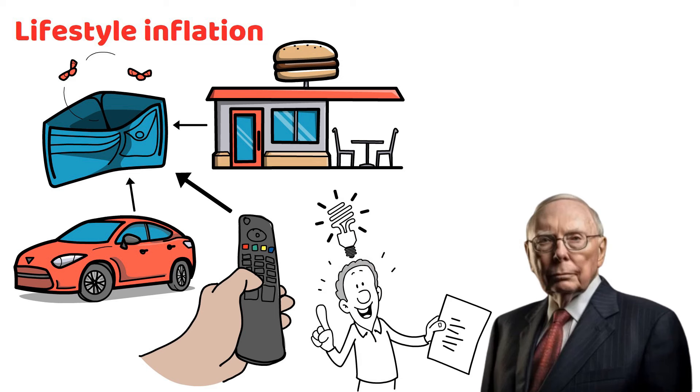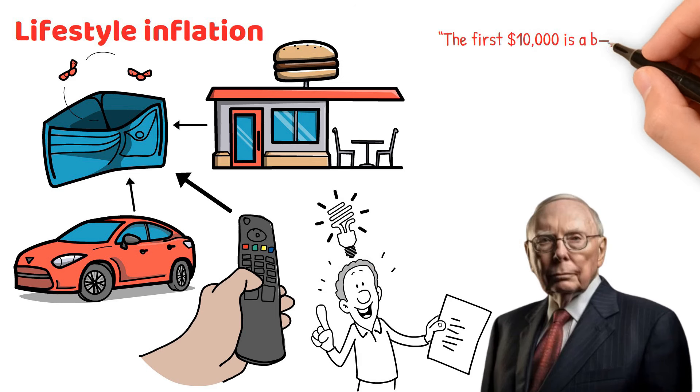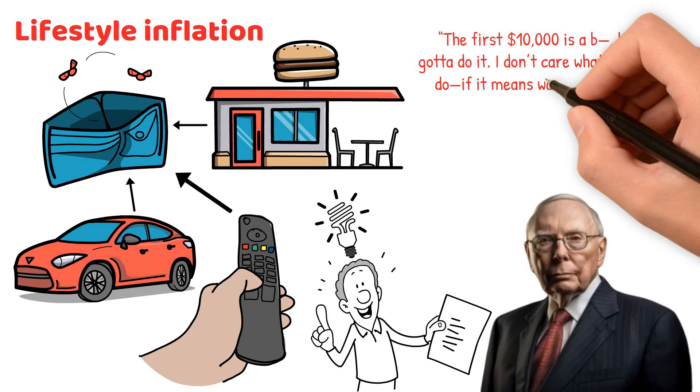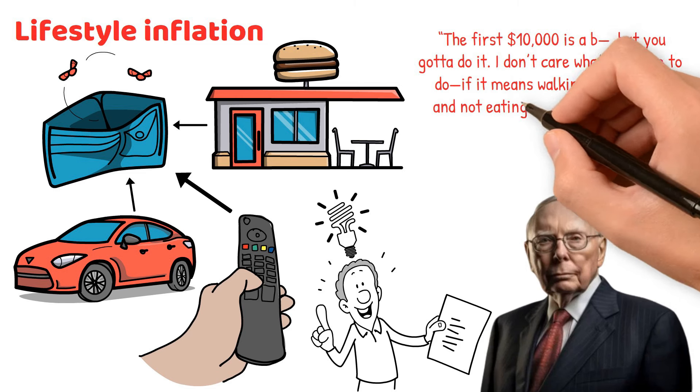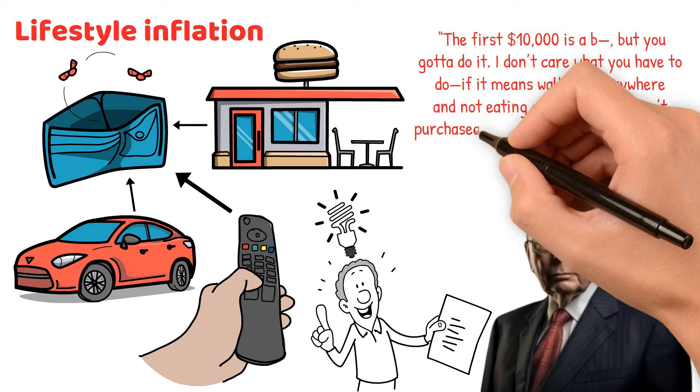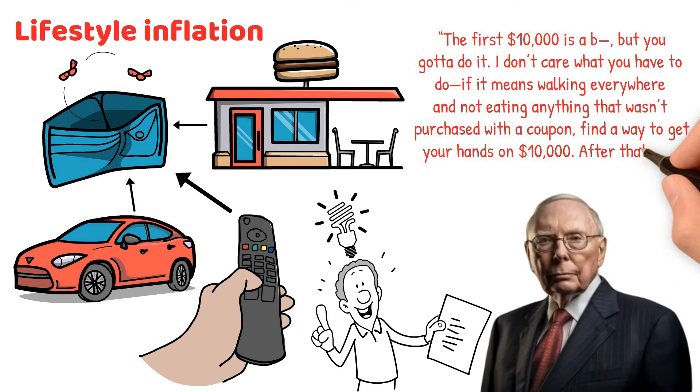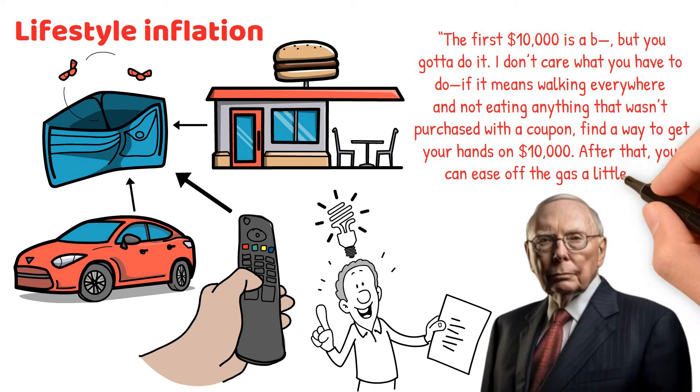Investor Charlie Munger, Warren Buffett's longtime partner, had some blunt advice on this. He said, the first $10,000 is a B, but you gotta do it. I don't care what you have to do. If it means walking everywhere and not eating anything that wasn't purchased with a coupon, find a way to get your hands on $10,000. After that, you can ease off the gas a little bit.